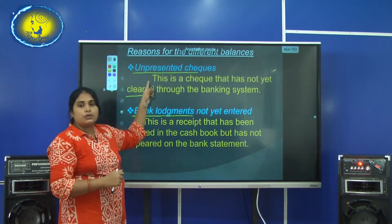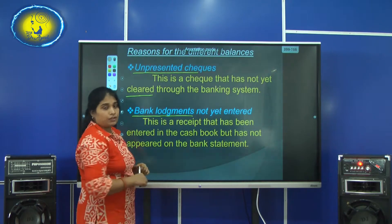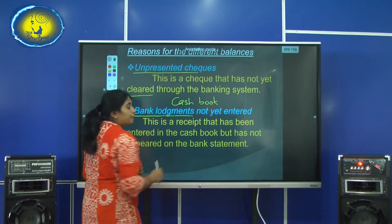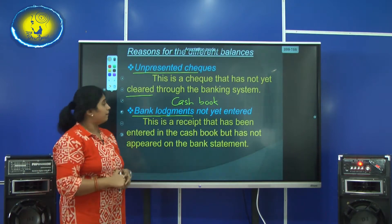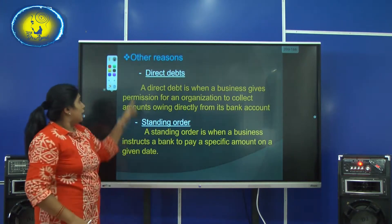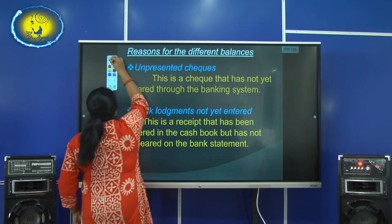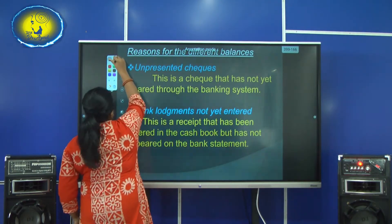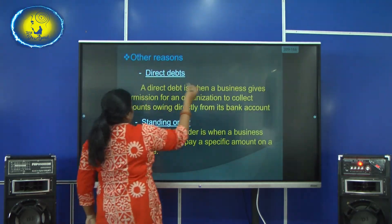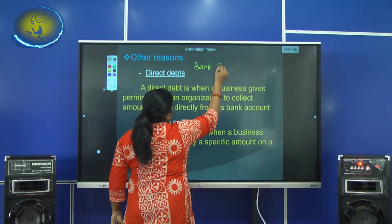Both of these reasons will be found when you compare the cash book. These two reasons will be in the cash book. When we do an example, I will show you which side they will occur. There are also other reasons which you will be able to find in the bank statement.